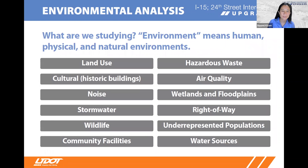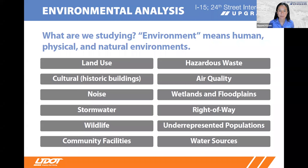Now that you have some information on why we are initiating the study, let's talk about what we're going to be studying. This slide shows some of the different resources we will consider when evaluating potential impacts of the project. The goal of the study is to determine the best way to improve mobility on roads in the study area while limiting impacts to the community and the environment. If there are certain resources that are particularly important to you, please submit a comment and let us know what they are and why they matter to you.